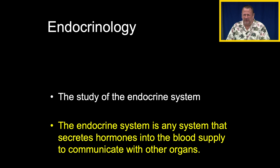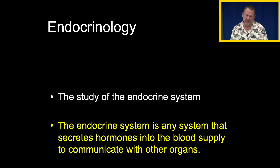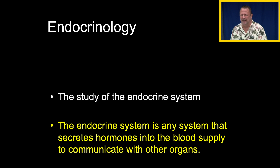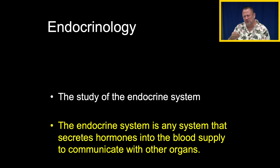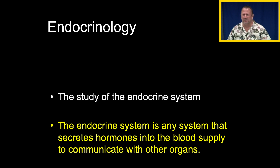Before we get too excited about the endocrine system, if you've ever taken a course about it from anyone else, it gets really, really complicated, so we're going to make it really simple. Endocrinology is the study of the endocrine system, and the endocrine system is any system that will secrete a hormone into the blood supply to communicate with other organs. Your body has countless endocrine systems. Some of them we've already talked about, like the renin-angiotensin-aldosterone system.